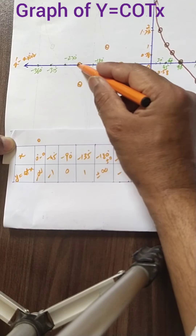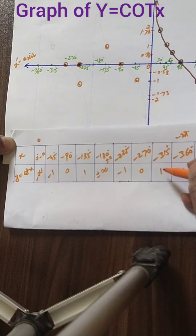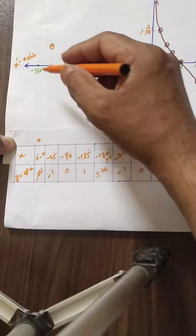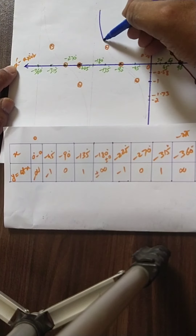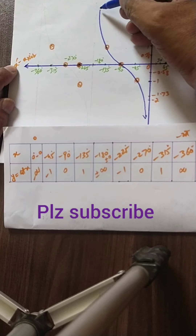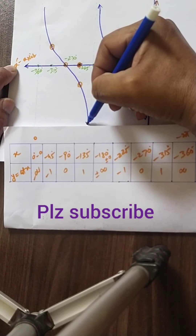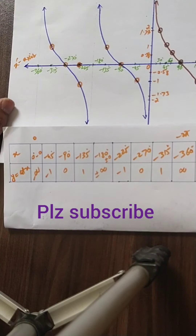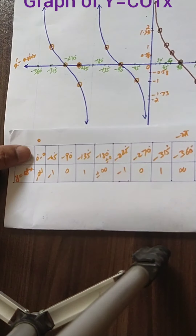At minus 270 degrees, the value is 0. At minus 315 degrees, it is plus 1. At minus 360 degrees, it goes to plus infinite. Again, we join these values with freehand from 0 to minus 180. Any trigonometric function has no corner point — it is always a curve. This is the graph from 0 to minus 360 of the cotangent function.